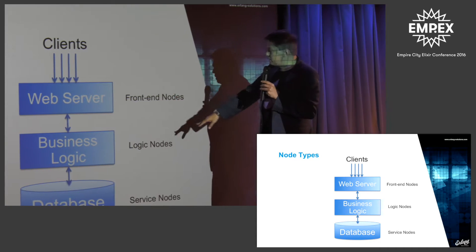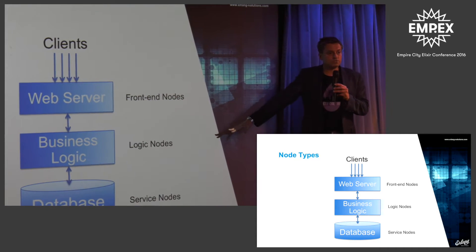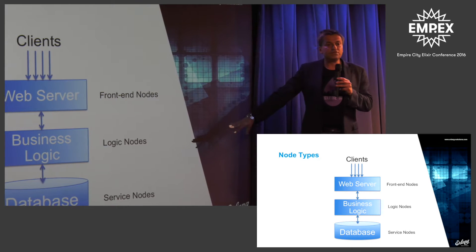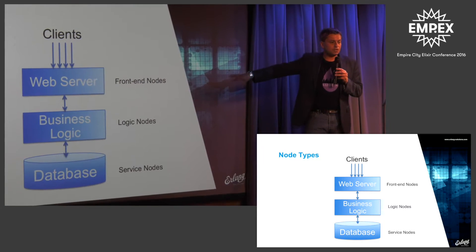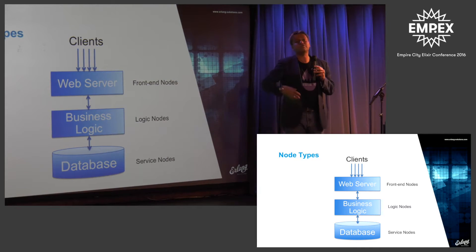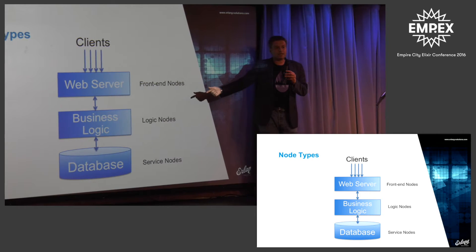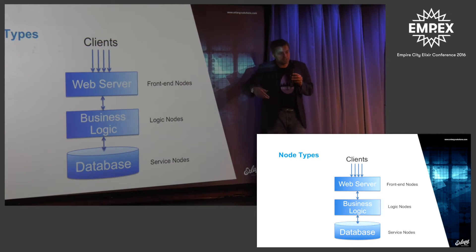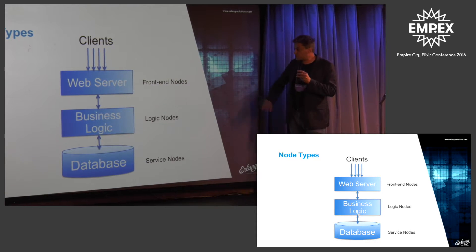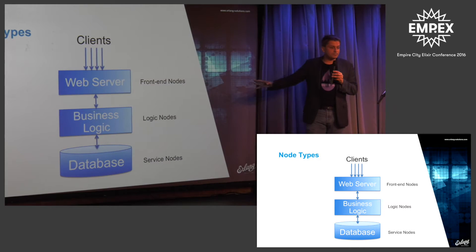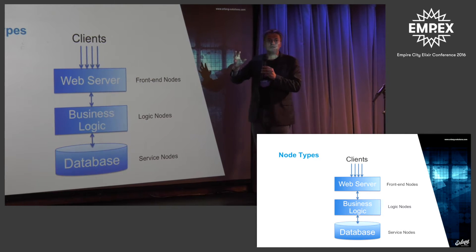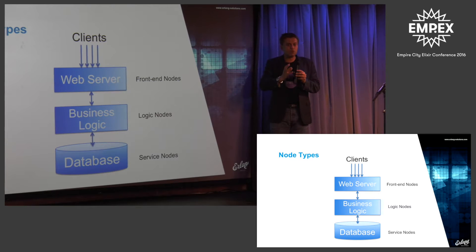We then have a middle tier — which we tend to refer to as your logic nodes. They tend to run and manage all the business logic. And then finally, you've got a set of service nodes which the logic nodes need to execute. It could be an authentication server, offline storage — so you're sending a WhatsApp message to someone who's not online. It could be a search engine or an API towards a third-party service.